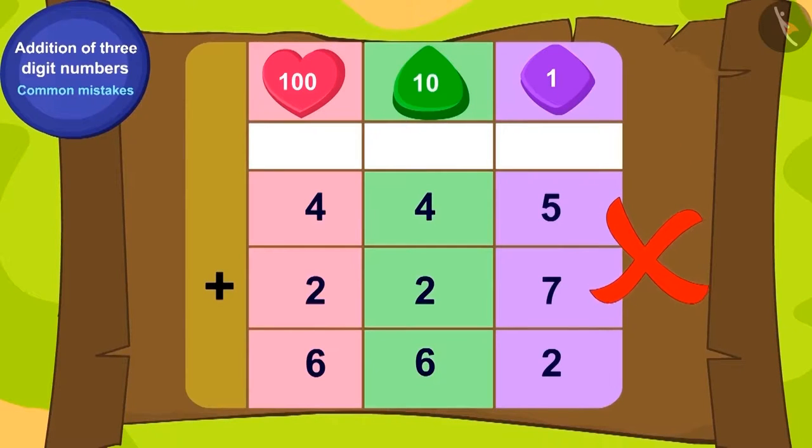Yes! You have rightly found out that this addition is incorrect. Can you tell what went wrong here? Here, while writing addition of 5 ones and 7 ones as 12 ones, we forgot to write the carry-over of 1.